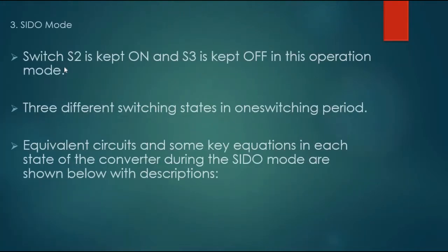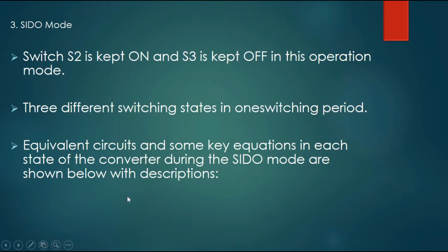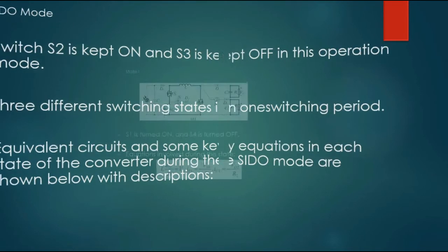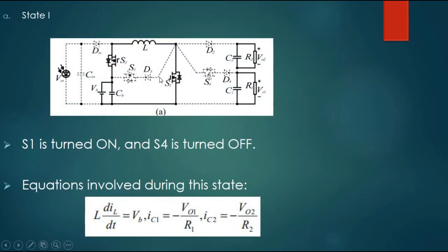Mode 3 — CITO mode: switch S2 is kept ON and S3 is kept OFF in this operation mode. There are three different switching states in one switching period. Equivalent circuits and key equations in each state of the converter during the CITO mode are shown. State 1: S1 is turned on and S4 is turned off.